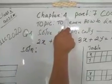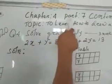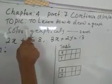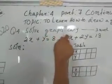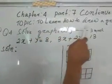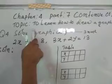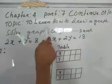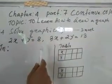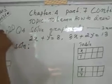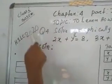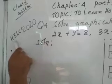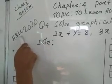Okay, chapter number four, part number seven, continuation. Topic: to learn how to draw a graph. So we are going to draw a graph again. You see, class 10, Bossian. This question is asked in 2020 IS-SLC.